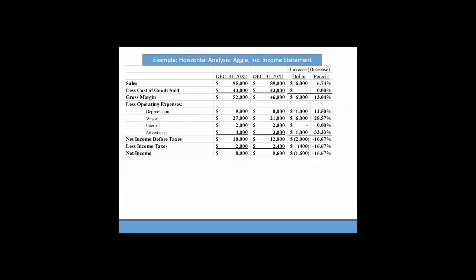Now if we do this for the income statement, it works the same way. We can see from Aggie Inc. that sales increased $6,000. So $6,000 divided by $89,000 is a 6.74% increase. So sales increased about 7%. Now if we look at cost of goods sold, we can see that that increased zero. Zero divided by the base year amount of $43,000, that's the 20x1 amount, that's a 0% increase.